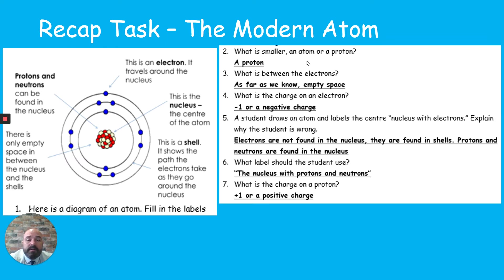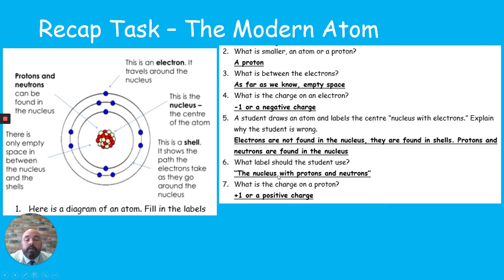The charge of an electron is minus one (negative), and the charge of a proton is positive one. A helpful memory tip: P for positive, P for proton. If a student draws an atom and labels the centre nucleus with electrons, they are wrong — electrons aren't found in the nucleus, they're found in shells. The nucleus should be labelled as containing protons and neutrons.